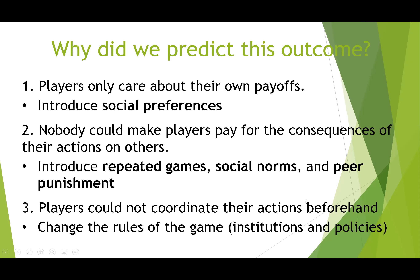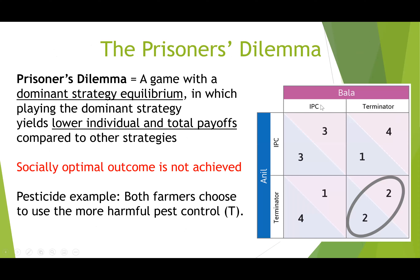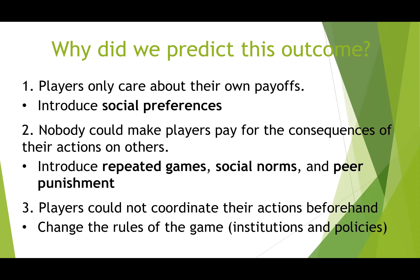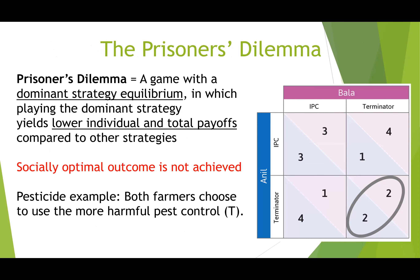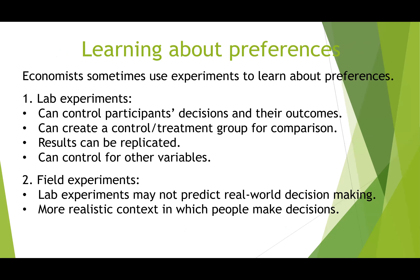Another key assumption was that they didn't know what the other person would choose, so both picked Terminator. If they did know, they might agree beforehand to both choose the three-three outcome. You can change these rules with institutions and policies — that's why organizations like the WTO exist. Discussing outcomes beforehand helps achieve the top-left outcome rather than the bottom-right.